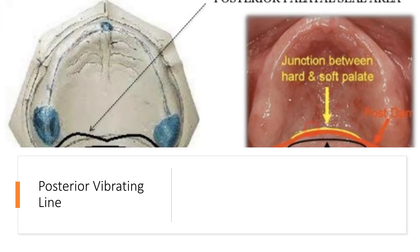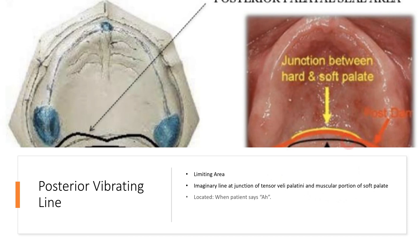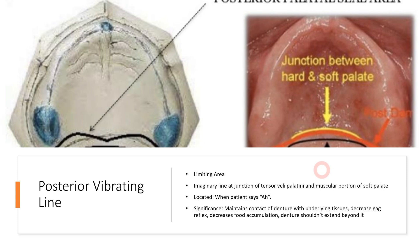The last limiting structure we'll discuss is the posterior vibrating line, which is an imaginary line at the junction of the tensor veli palatini and the muscular portion of the soft palate. It is similarly located when the patient says 'ah.' The significance is that the denture should not be extended posterior to the posterior vibrating line because if it does, it can lead to gag reflex and food accumulation just beneath the denture. The denture should be present just at or a little bit ahead of the posterior vibrating line, which leads to decreased gag reflex, decreased food accumulation, and excellent retention when properly achieved through dental impression.